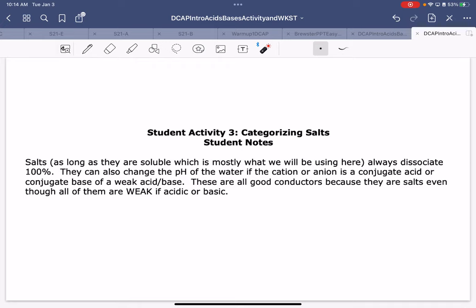A little bit of notes here. Salts, as long as they are soluble, which is mostly what we are using in here, they always associate 100%. They can change the pH of water if the cation and anion is a conjugate acid or conjugate base of a weak acid or weak base. These are all good conductors because they are salts even though all of them are weak if acidic or basic.